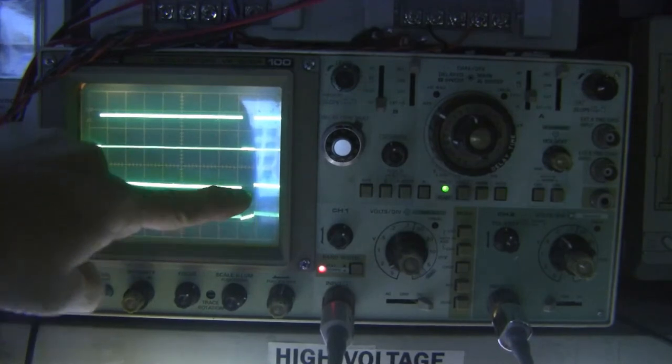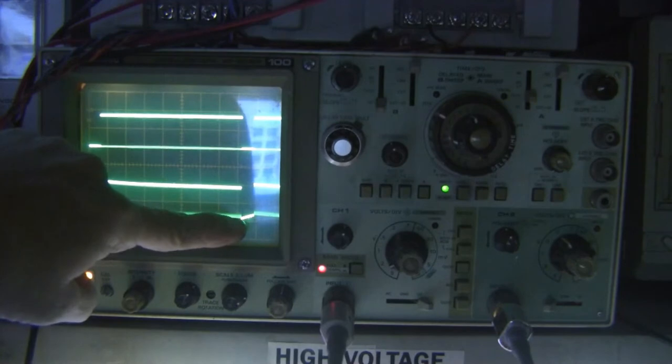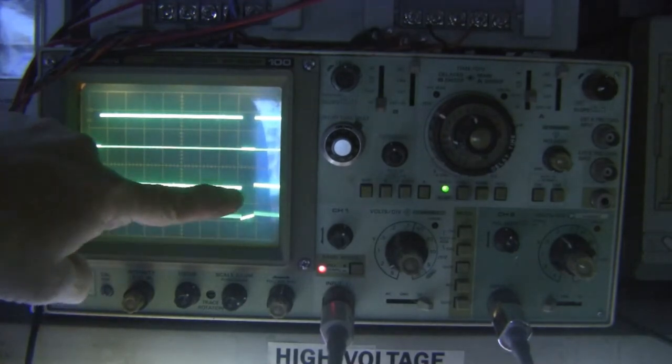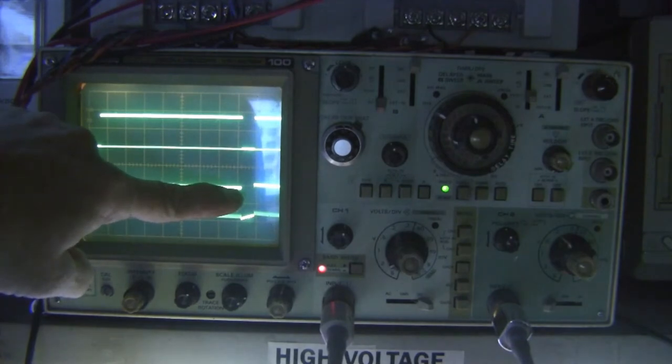We'll look at in a moment. And so you can see that when this is low, it's making the grid more negative and cutting off the beam, and when it's high, that's active video, active scanning.